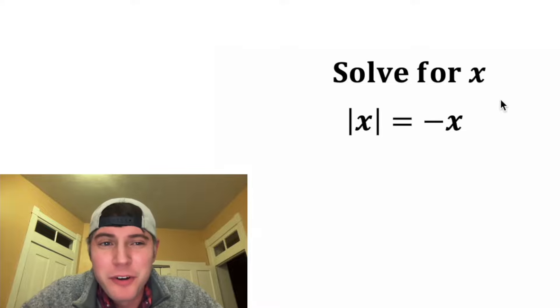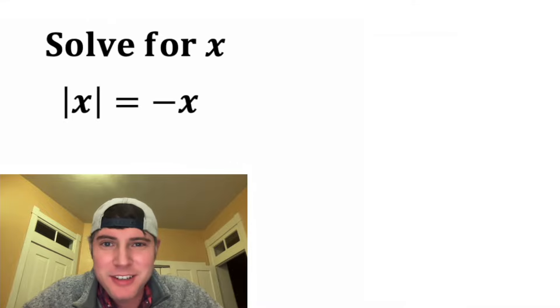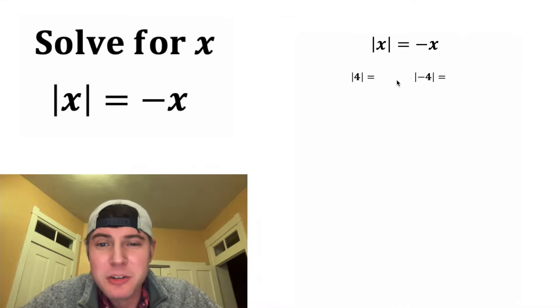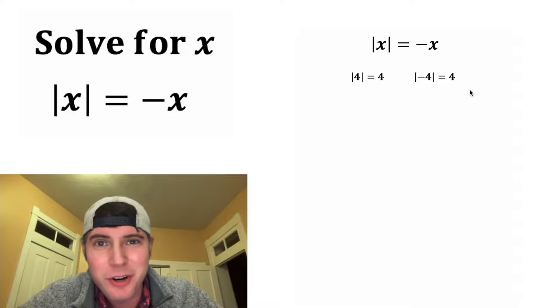Hey guys, this looks like a fun one. It says solve for x, and it's the absolute value of x is equal to negative x. Well, this feels kind of uncomfortable because no matter what you plug into the absolute value, you get a positive number. For example, positive four gives us four and negative four gives us four.